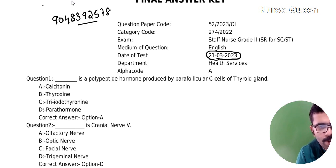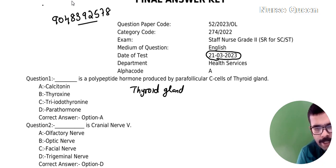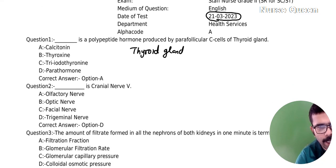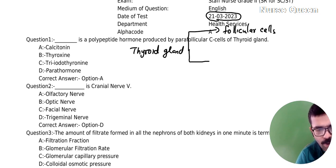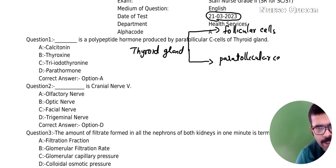Let's look at the thyroid gland. The thyroid gland produces two types of endocrine cells: the first one is follicular cells, and the second one is para follicular cells.